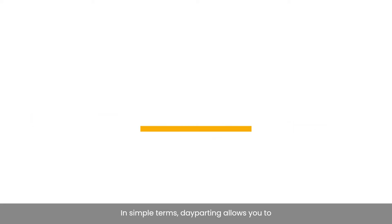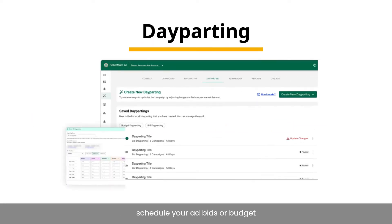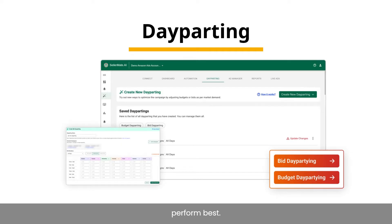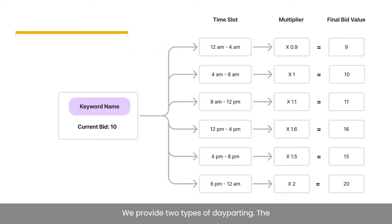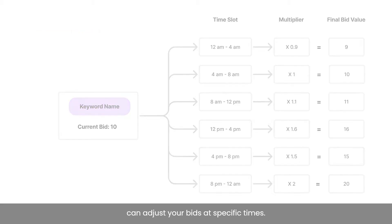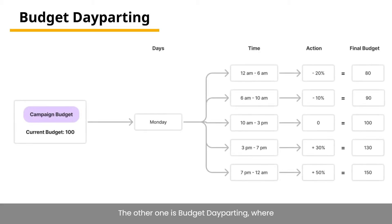In simple terms, dayparting allows you to schedule your ad bids or budget for specific times of the day or days of the week when your ads are most likely to perform best. We provide two types of dayparting: the first is bid dayparting, where you can adjust your bids at specific times; the other is budget dayparting, where you can adjust budget across selected timeslots.